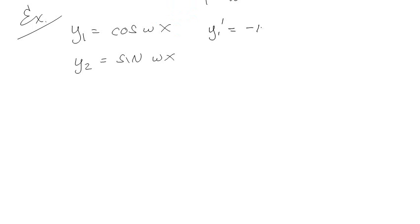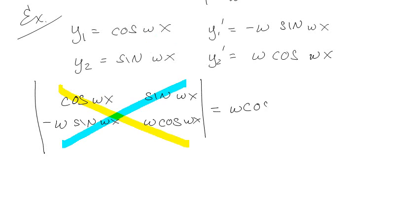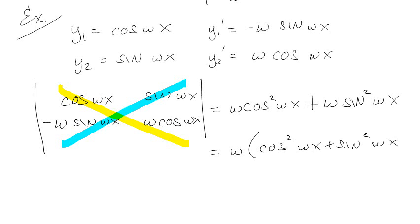and we'll pretend that happened. So y1 prime is minus omega cosine omega x, and y2 prime is omega cosine omega x. Oh sorry, sine. Math is hard. Math isn't hard. Writing is hard. So I've got my y1, y1 prime, and then my y2, y2 prime, and I'm going to do my little shapoosh, shapoosh. So I've got omega cosine squared omega x minus and negative omega sine squared omega x. Pull out the omega,